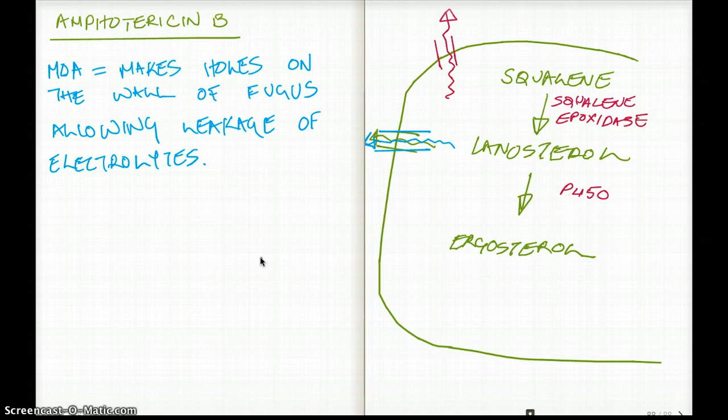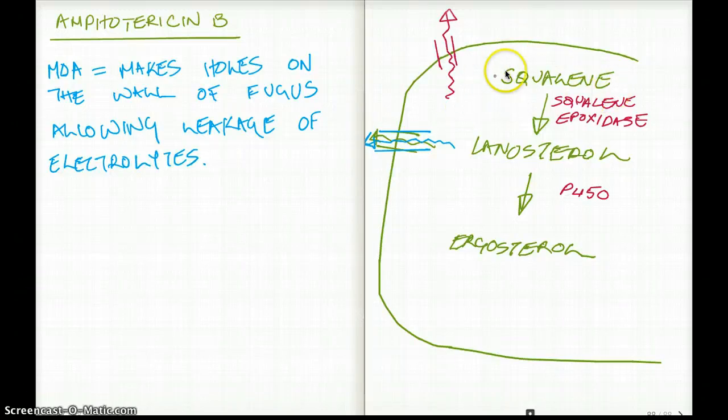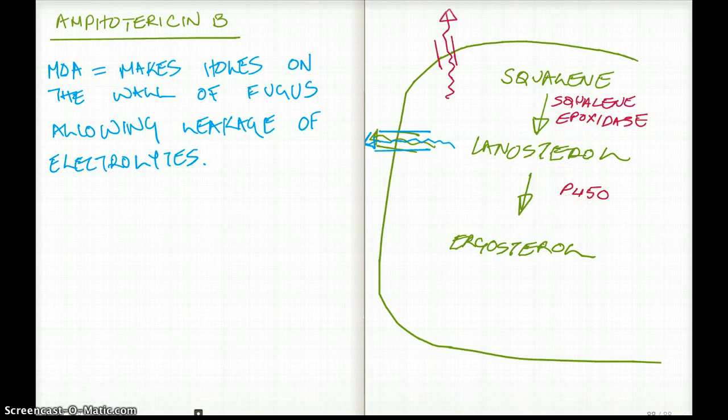I would like to take this opportunity to talk about some of the other mechanisms that are also available to us in order to kill fungus. Inside the fungus squalene is converted to lanosterol through the enzyme squalene epoxidase. And lanosterol is again converted to ergosterol through P450 metabolism. Now both squalene epoxidase and P450 can be inhibited by drugs.